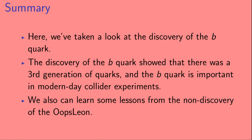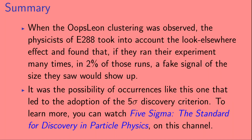To summarize: we've taken a look at the discovery of the B quark, which showed that there was a third generation of quarks, and the B quark is important in modern-day collider experiments. We can also learn lessons from the non-discovery of the Oops-Leon. When that clustering was observed, the physicists of E288 took into account the look-elsewhere effect and found that in 2% of experimental runs, a fake signal of that size would show up. It was the possibility of occurrences like this that led to the adoption of the 5-sigma discovery criterion. You can watch the video '5 Sigma: The Standard for Discovery in Particle Physics' available on this channel.